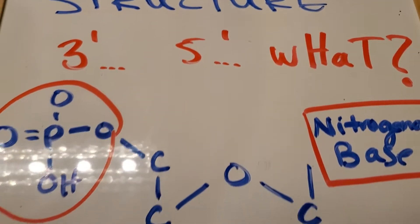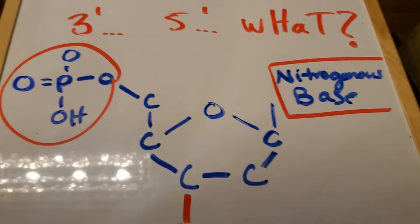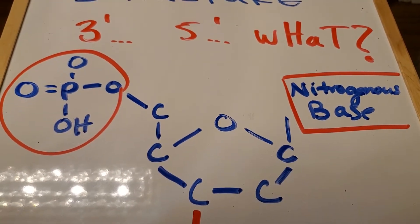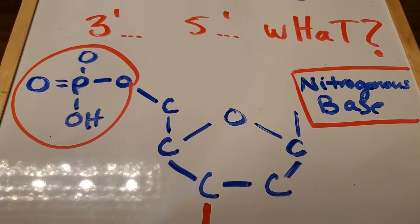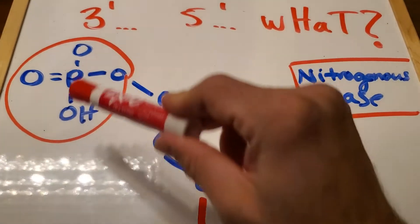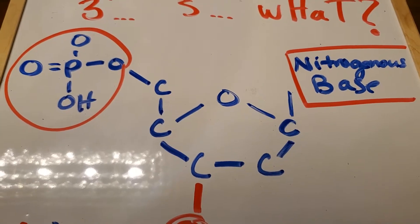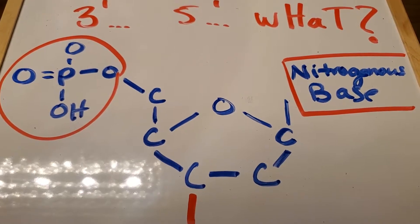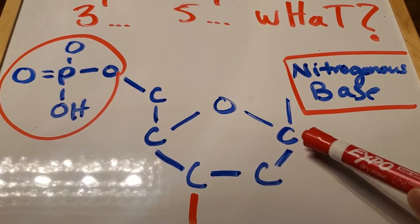So, let's start off with our nucleotide structure. This right here is a deoxyribose nucleotide. So, this is the monomer unit, this whole thing, the monomer unit of a deoxyribonucleic acid, DNA. So, this is the monomer unit.